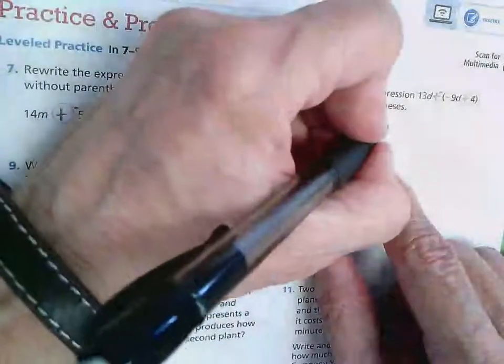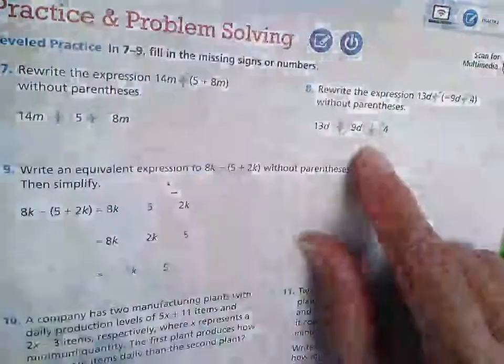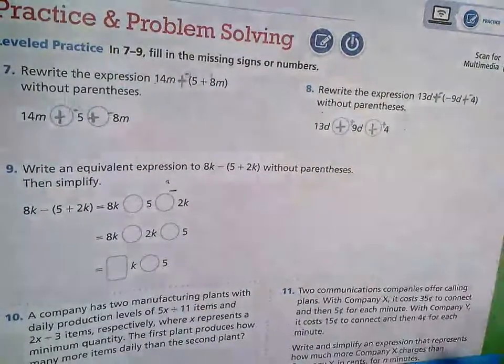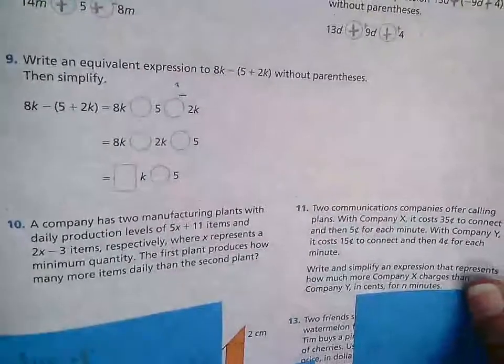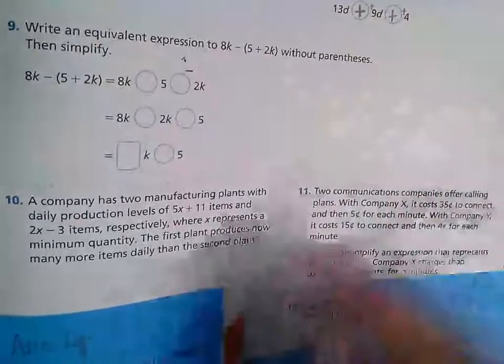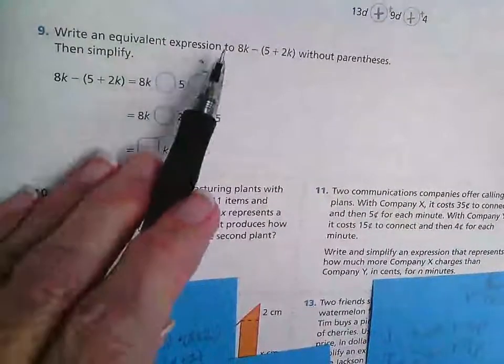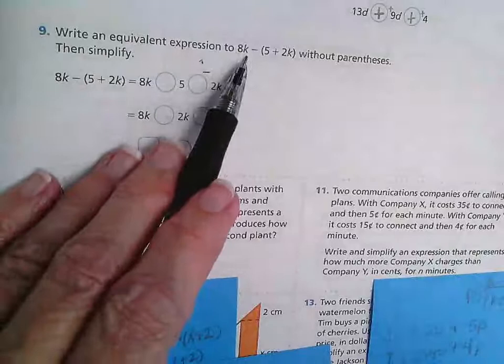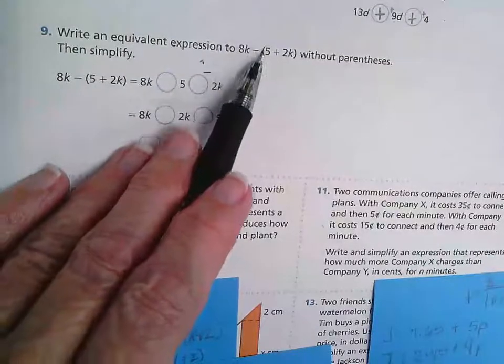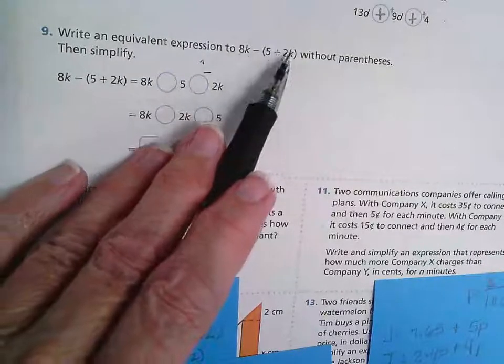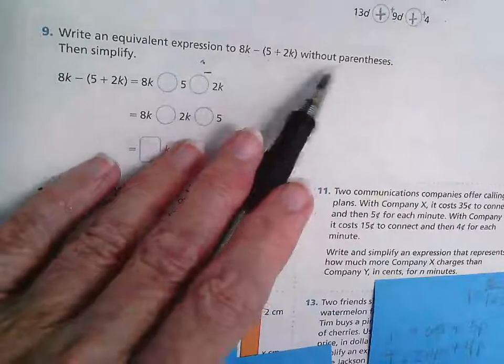And if you want to put the positive there like I did on the 9d, that's fine. Number 9, write an equivalent expression to 8k minus parentheses 5 plus 2k without the parentheses.